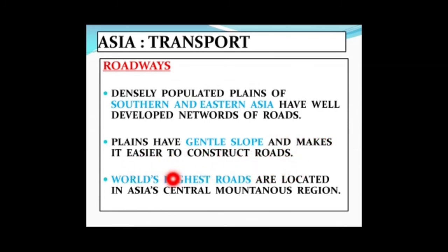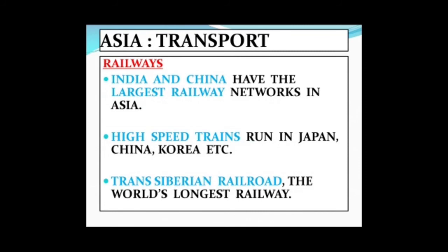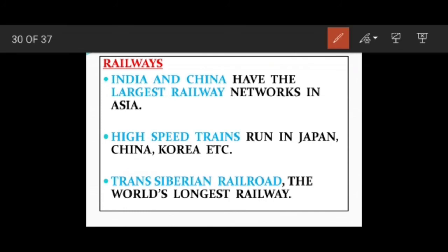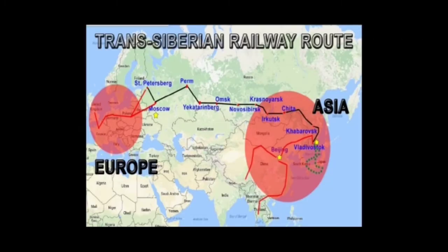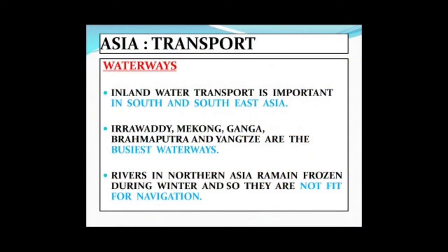India and China have the largest railway network in Asia. High-speed trains run in Japan, China and Korea. The Trans-Siberian Railroad is the longest railway in the world, connecting the far east of Asia to Europe, crossing through very cold areas.